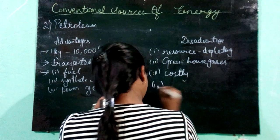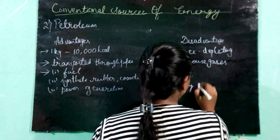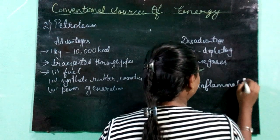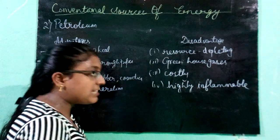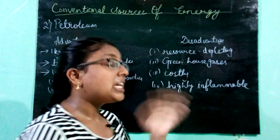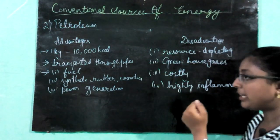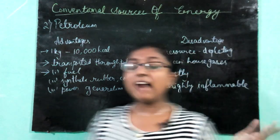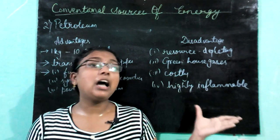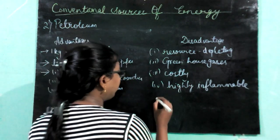The fourth disadvantage is that petroleum is highly inflammable, meaning it can catch fire very easily. Therefore, we should be very careful while handling petroleum. During transportation, special care is taken because of this inflammable property.